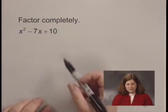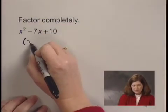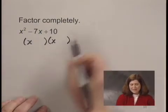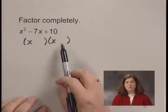So we need to factor this by trial and error method, and since the first term is x squared, if it factors, it will factor into two binomial factors. The first term in each binomial will be x.